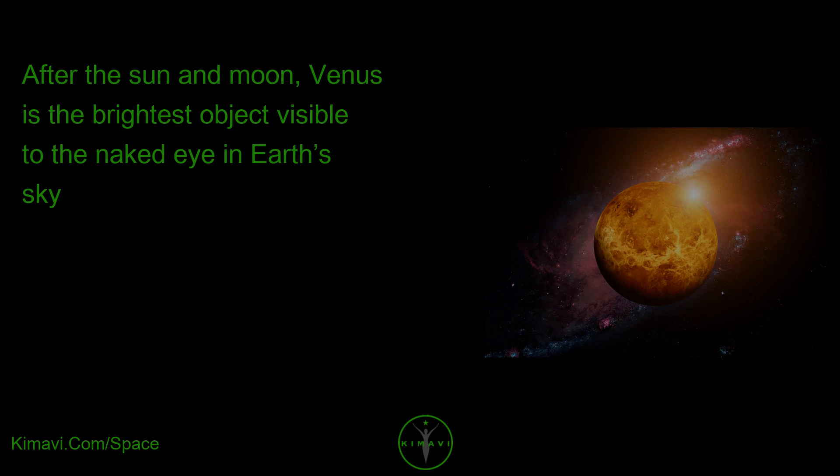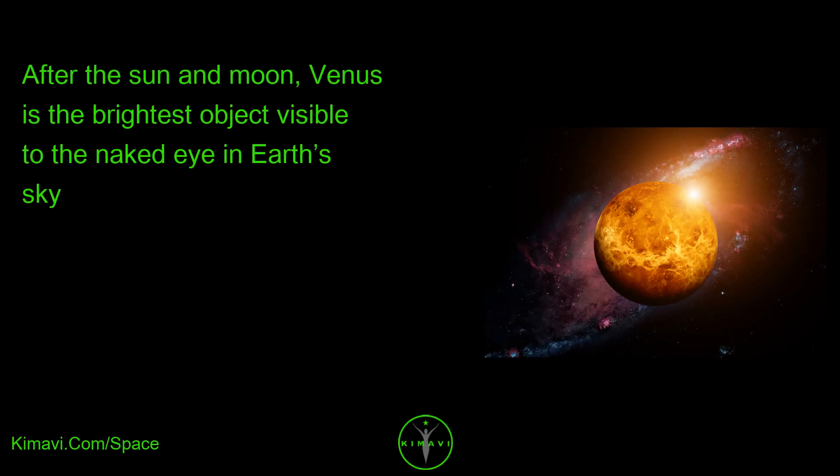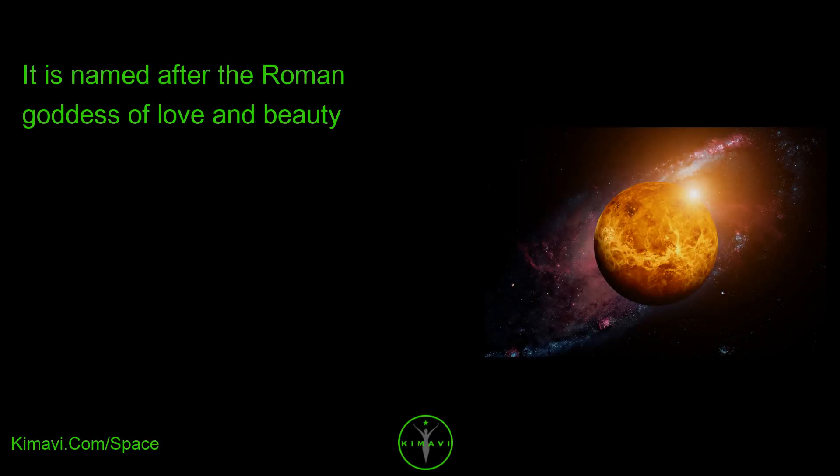After the Sun and Moon, Venus is the brightest object visible to the naked eye in Earth's sky. It is named after the Roman goddess of love and beauty.